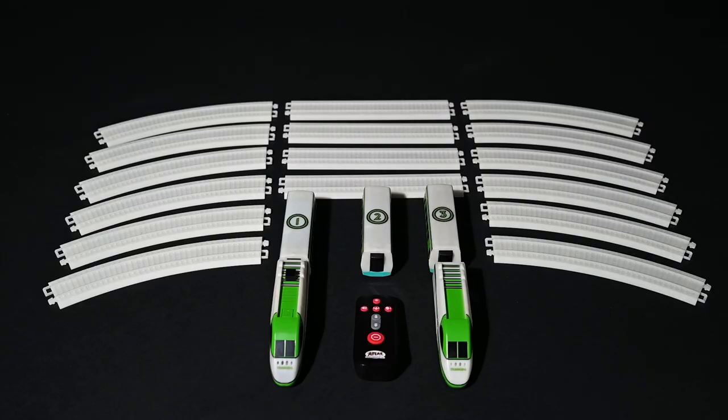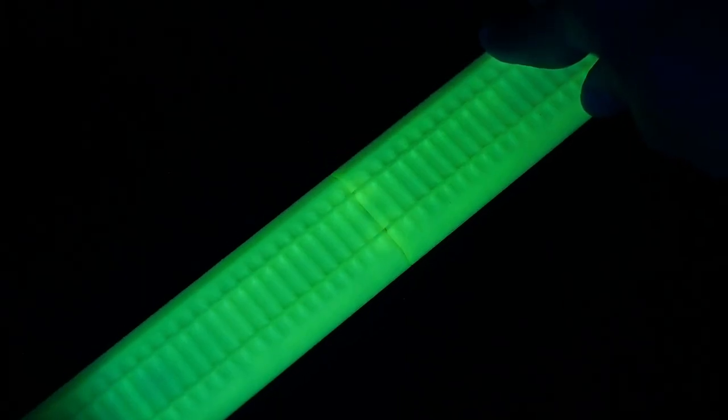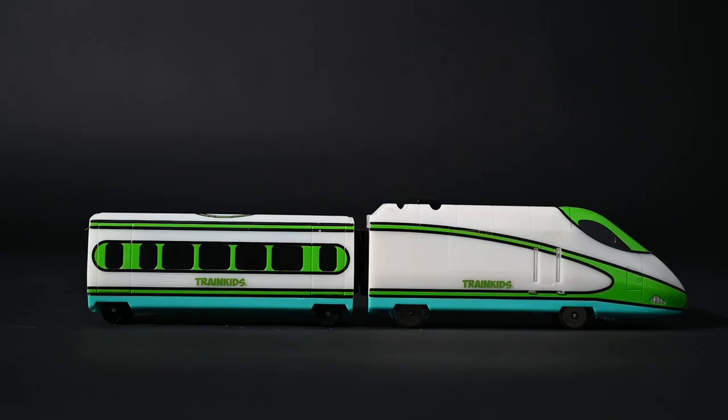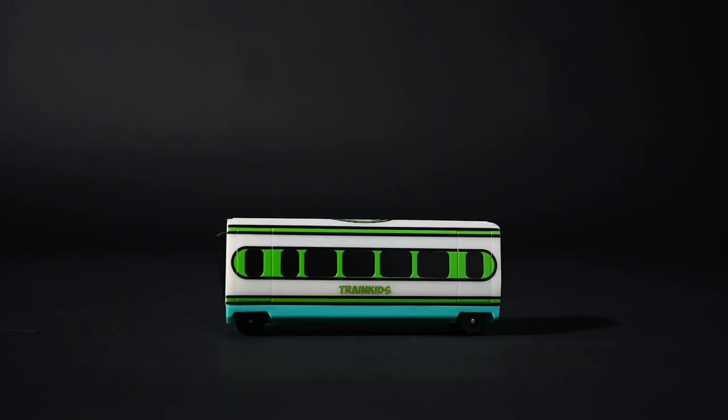Everything you see here is included. From the easy-to-assemble snap-together track, to a powered locomotive and first-class battery car, to two passenger cars and an unpowered locomotive.